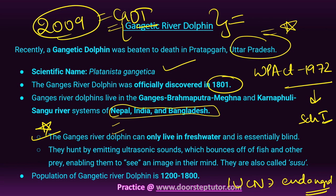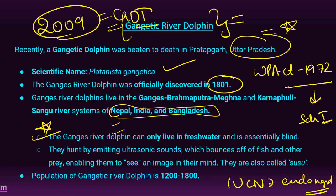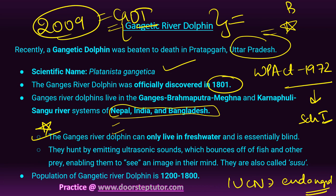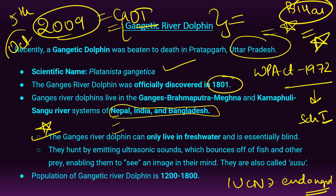Under the Convention on Migratory Species, the Gangetic River Dolphin is listed under Appendix II — for migratory species that need conservation and would significantly benefit from international cooperation. Government steps include Project Dolphin, the Dolphin Sanctuary in Bihar, and the celebration of National Ganga River Dolphin Day on 5th October.